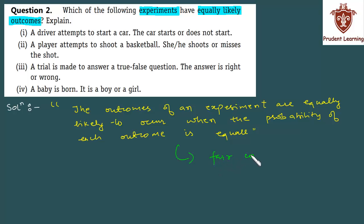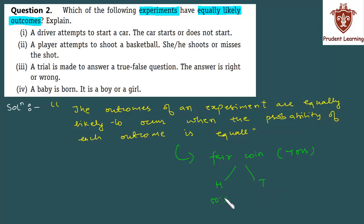आपके पास एक fair coin है, और आप उसको toss करना चाहते हैं. Fair का मतलब ही है कि इसके जो दोनो sides हैं वो different हों — एक तरफ head, एक तरफ tail. जब आप coin को toss करेंगे, तो 50% chances हैं कि head मिलेगा, और 50% chances हैं कि tail मिलेगा. Percentage में 50-50%, जो probability में 1 by 2 हो जाएगा.